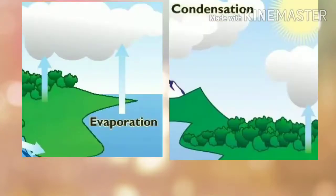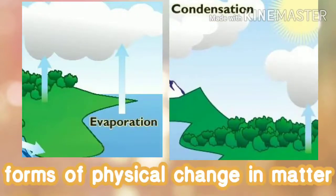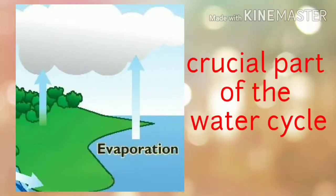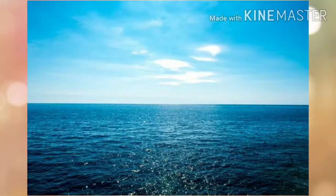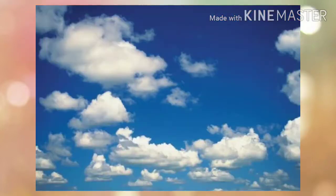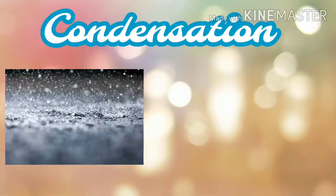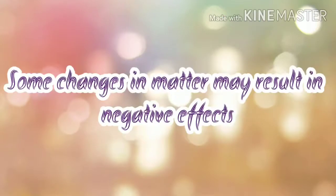Evaporation and condensation are forms of physical change in matter. Evaporation is a crucial part of the water cycle — water from all areas on Earth will not be recycled if it does not evaporate into water vapor as clouds in the sky. Condensation is important in transforming water vapor into droplets of water stored in clouds.